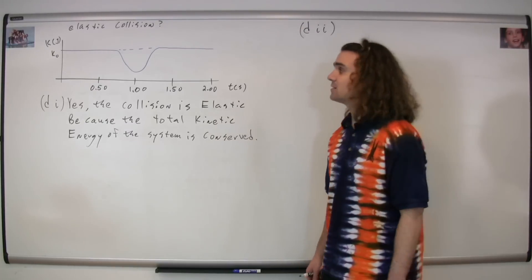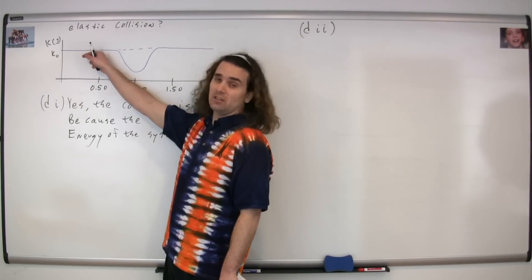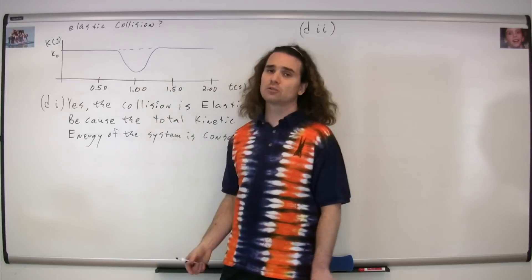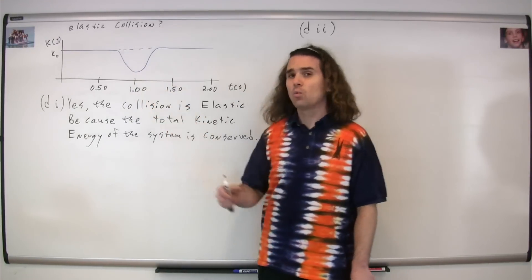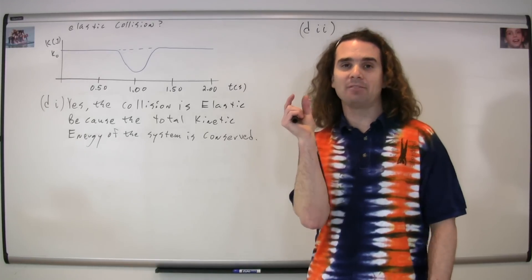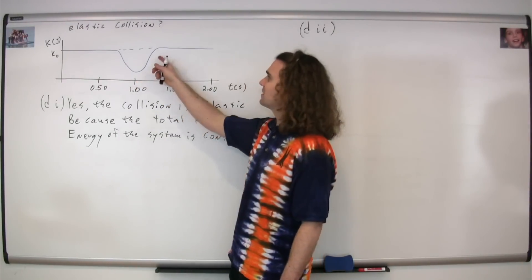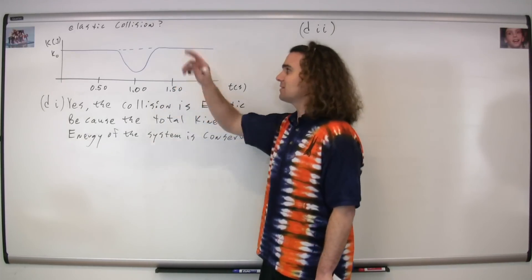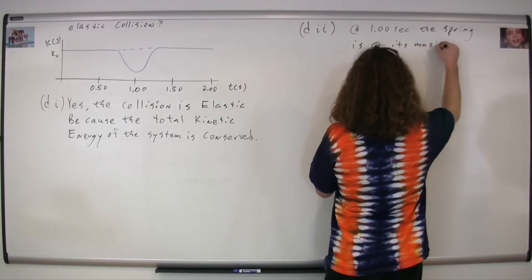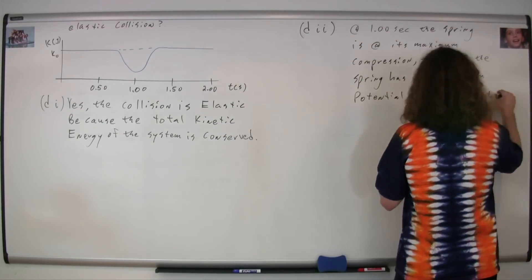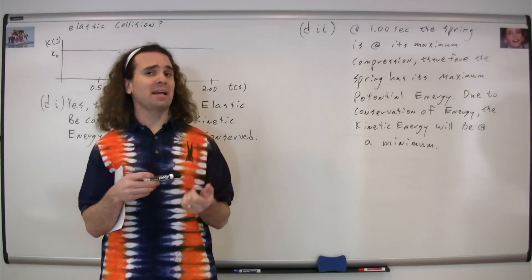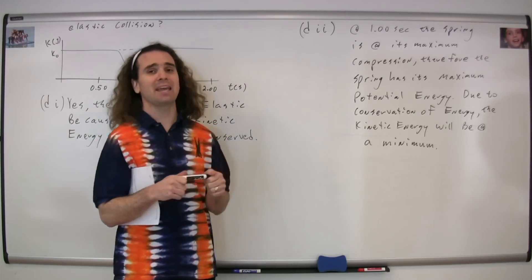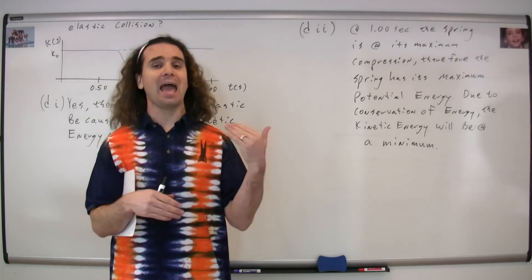Part dii asks to briefly explain why there is a minimum in the kinetic energy curve at t = 1.00 seconds. This is conservation of mechanical energy. Before the collision, all energy is kinetic. During the collision, the spring compresses, gaining elastic potential energy while kinetic energy decreases. At t = 1.00 s, the spring is at maximum compression, so it has maximum elastic potential energy. Due to conservation of mechanical energy, the kinetic energy of the system is therefore at its minimum value at that point.